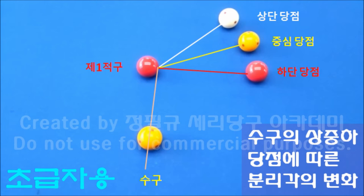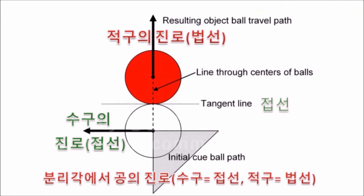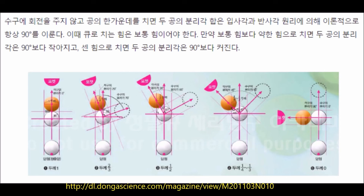분리각의 원리를 설명하는 그림입니다. 흰 공 수구가 빨간색 적구와 충돌한 순간, 두 공의 중간에 평행으로 된 접선이 있습니다. 두 공이 충돌하면 수구는 접선과 평행한 방향(왼쪽)으로, 빨간색 적구는 접선의 수직인 법선 방향(위쪽)으로 이동합니다. 수학에서 접선의 수직인 방향을 법선이라 하며, 적구는 법선 방향으로 진행합니다. 따라서 두 공은 90도의 분리각을 이룹니다.